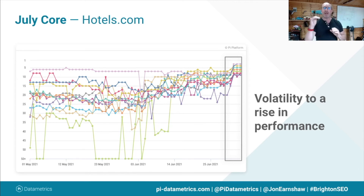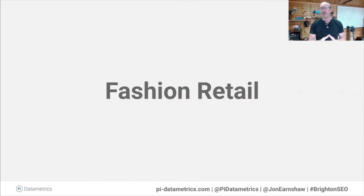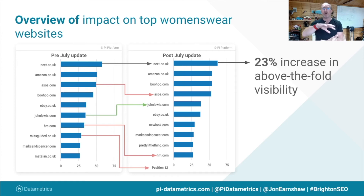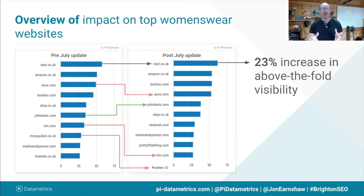Let's turn to fashion retail. I'm going to call out some of the winners and losers. Looking at competitive discovery charts tracking around 1,500 search terms: Next — brilliant, strength to strength, 23% increase in above-the-fold visibility. ASOS down. Boohoo up — they've bounced back because they lost it in the May 4th update previously. John Lewis up, finally getting back. H&M down several places. Missguided — biggest drop out of the top 10.